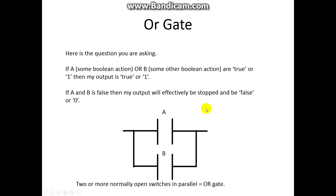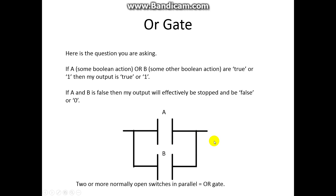The next type of gate is called an OR gate. An OR gate will allow information to pass if either gate A or gate B is true. We draw these in parallel, and you'll see when we start doing our ladder logic that this is actually how we're going to program it. So if A or B is true, then we have an OR gate.